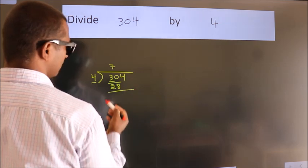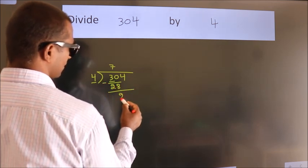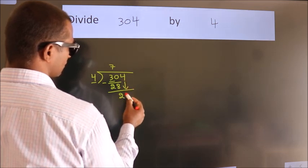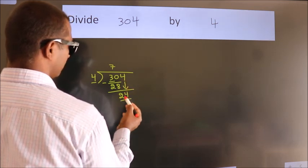Now we should subtract. We get 2. After this, bring down the beside number. So 4 down. So 24.